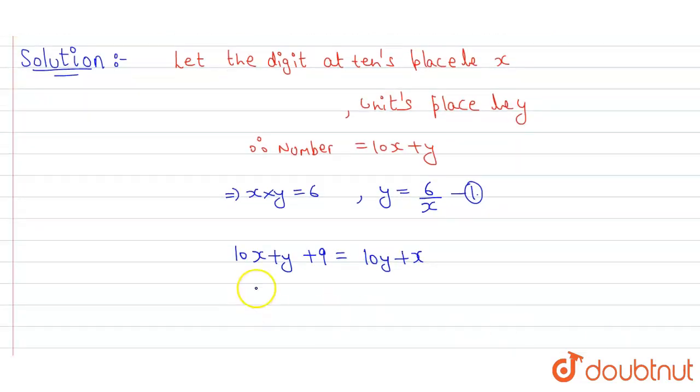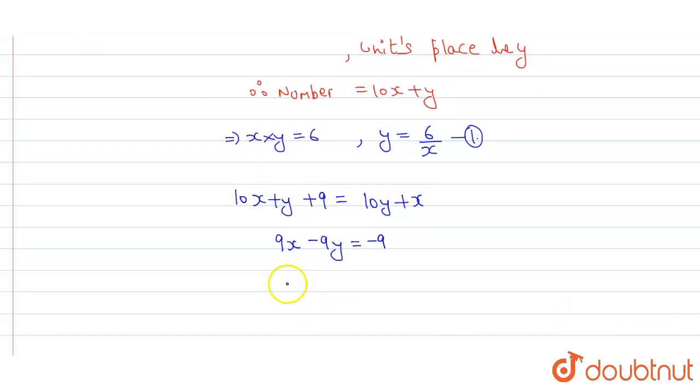We will solve this: 10x minus x plus y minus 10y equals minus 9, which gives 9x minus 9y equals minus 9. Taking 9 common, x minus y equals minus 1.